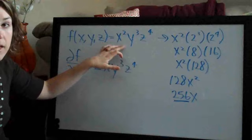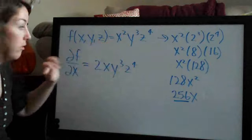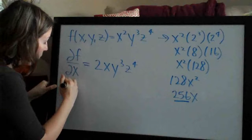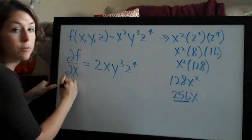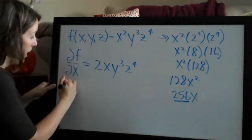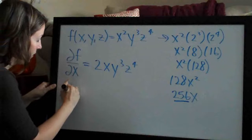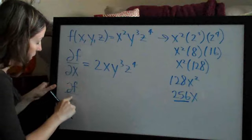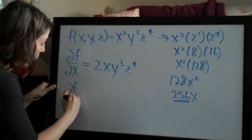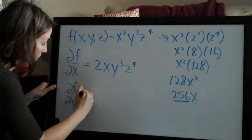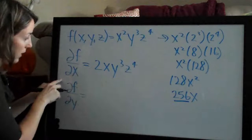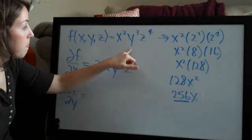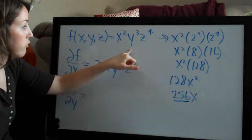Let's go ahead and do y so that we can see another example and hopefully start to understand. When we take the partial derivative with respect to y, it's going to be the partial derivative of f with respect to y, just like we did for x.